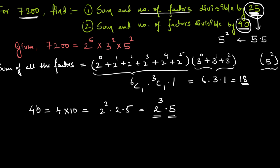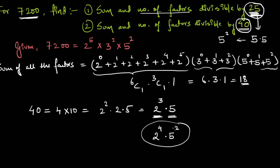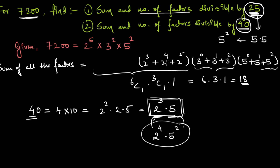Writing the expression for the sum of factors of 7200 again: (5^0 + 5^1 + 5^2) represents the 5-part. We need all terms to contain at least three 2s and at least one 5. So I'll remove all powers of 2 below 2^3 from the 2-bracket, and remove 5^0 from the 5-bracket.